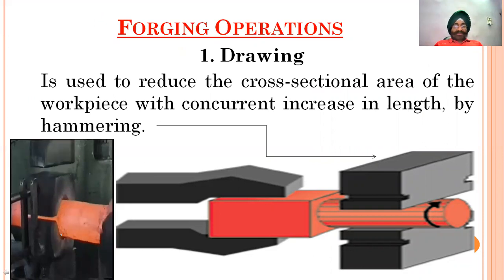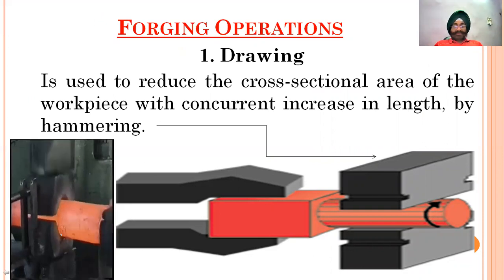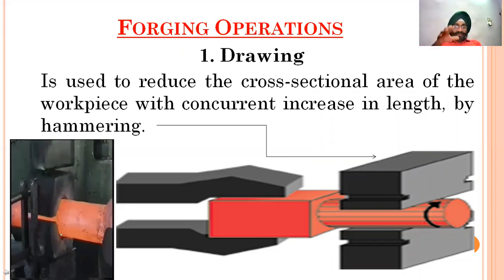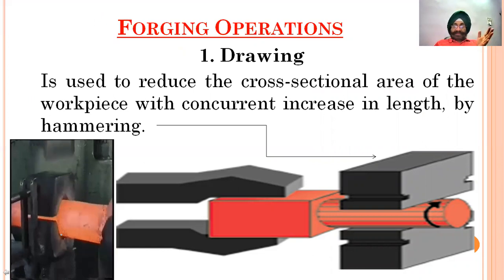The first forging process is drawing out. It is used to reduce the cross-sectional area of a workpiece by a concurrent increase in length. The cross-sectional area is reduced by blows applied to the left side.